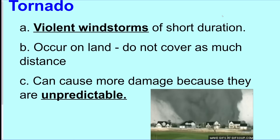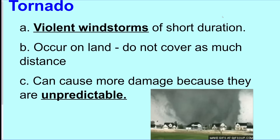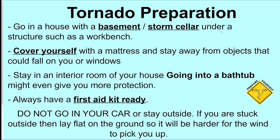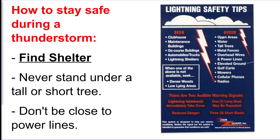Tornadoes are unpredictable — they form when cP and mT air masses meet, creating a funnel cloud. If a tornado hits, go straight to a basement or storm cellar and cover yourself. For thunderstorms and blizzards, just stay inside.